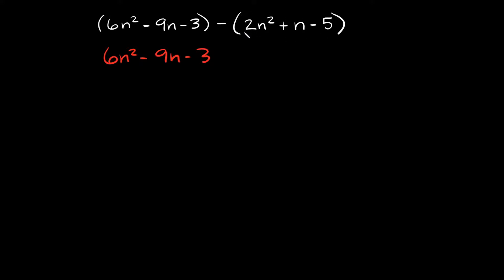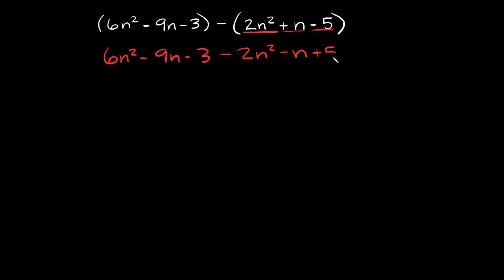So we have a positive 2n squared right here, and it's going to turn into negative 2n squared. Here we have a positive n, so down here it's going to become negative n, and then here we have a negative 5, so down here it's going to turn into positive 5.